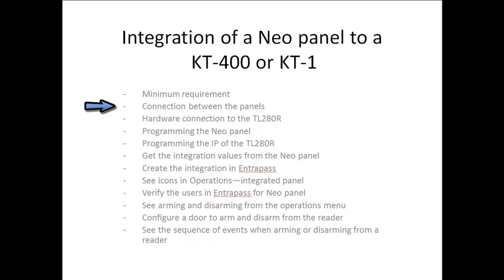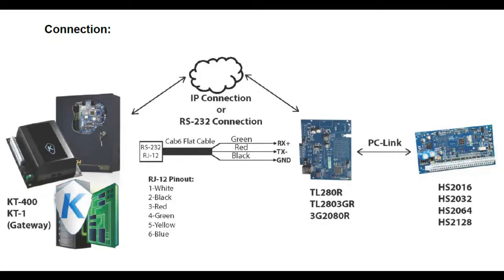Now let's take a look at the connection between the panels. From the right side, you can see the NeoPanel connects to the TL280R, and then the TL280R over Ethernet will communicate to the KT400, which then communicates with the EntraPass software. You have to remember that you'll need to use a static IP address on the KT400 or the KT1.